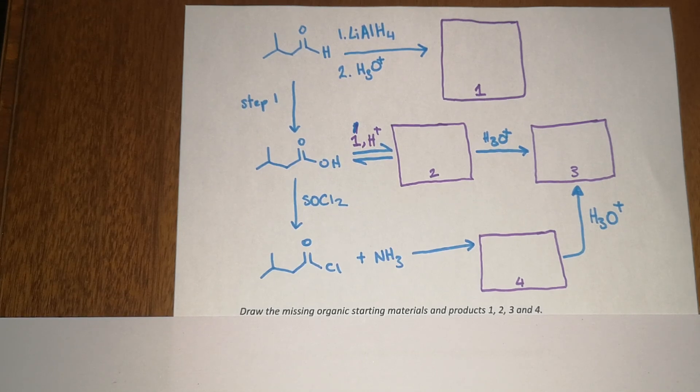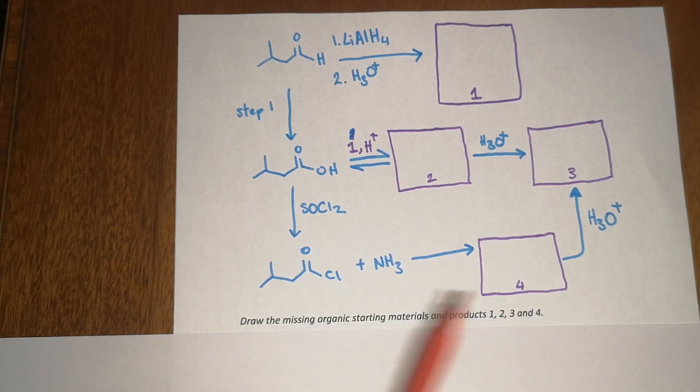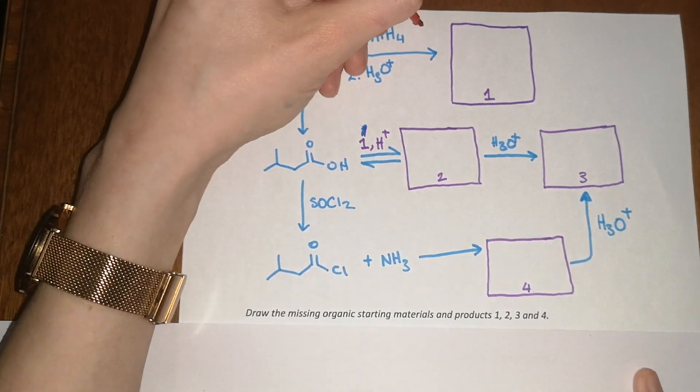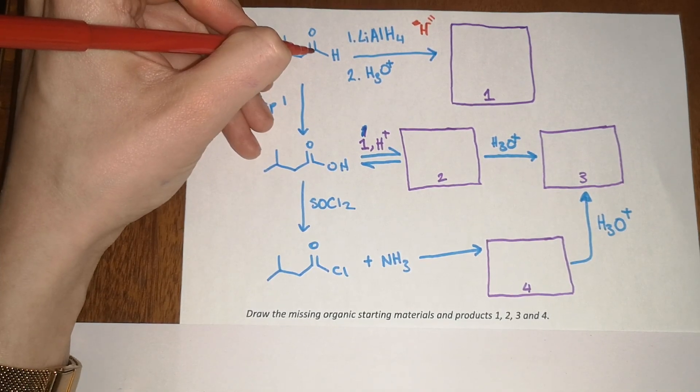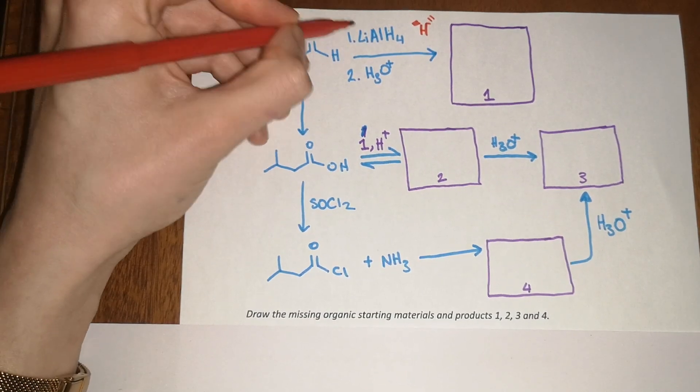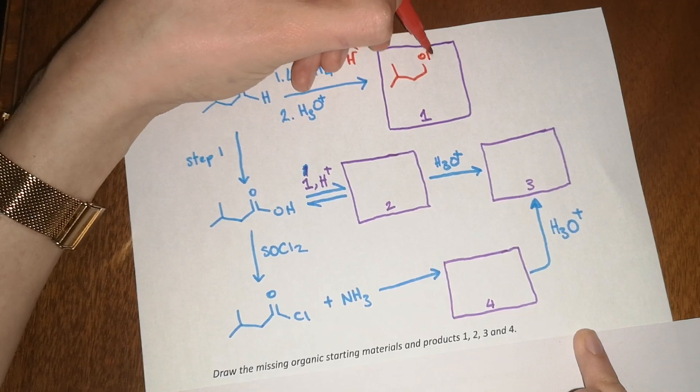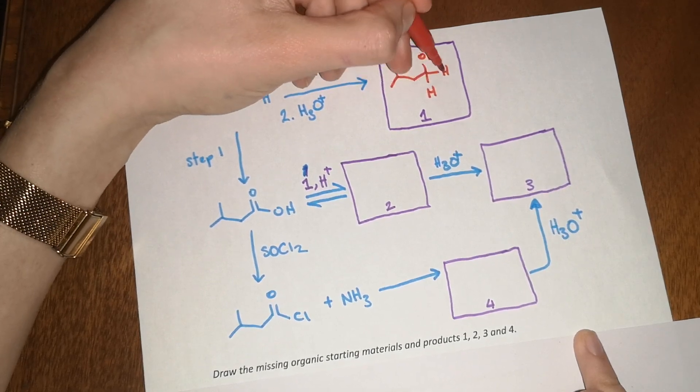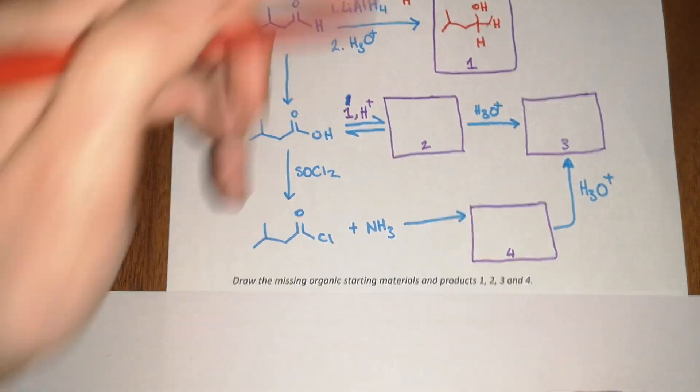First we're going to start with this question: draw the missing organic starting materials and products 1, 2, 3 and 4. The first one I hope is quite easy - lithium aluminium hydride is a source of H minus. If you have H minus it will attack this carbonyl, so you'll end up with another hydrogen at the bottom here, then you have to break this pi bond and it will pick up a H plus from H3O plus. So the product of this reaction is a primary alcohol - there's two hydrogens because it was an aldehyde, you added another hydrogen so you end up with two hydrogens in your product.